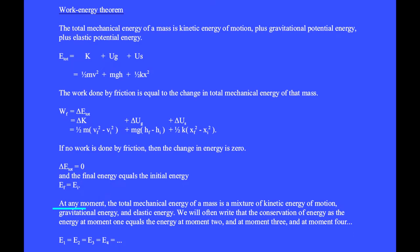At any moment, the total mechanical energy of a mass is a mixture of kinetic energy of motion, gravitational energy, and elastic energy. We'll often write the conservation of energy as the energy at moment 1 equals the energy at moment 2, and at moment 3, and at moment 4, and so on.